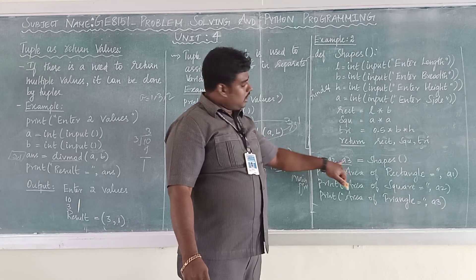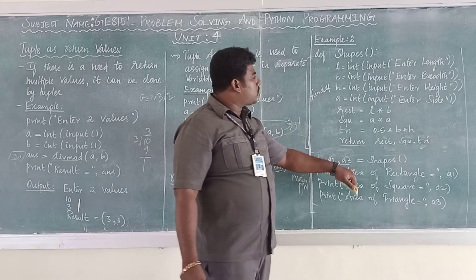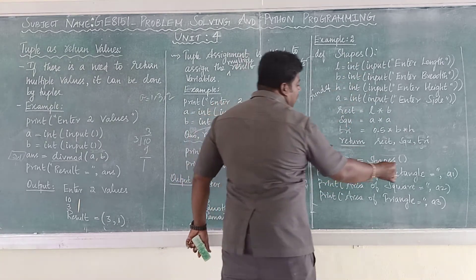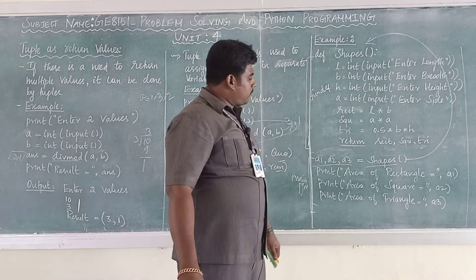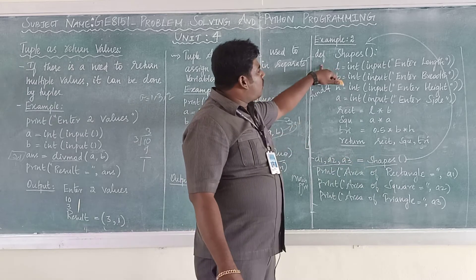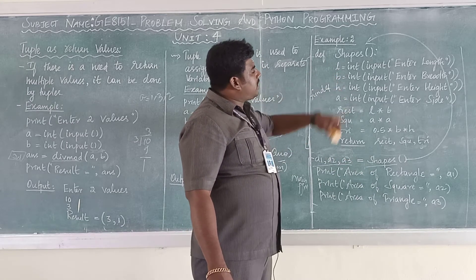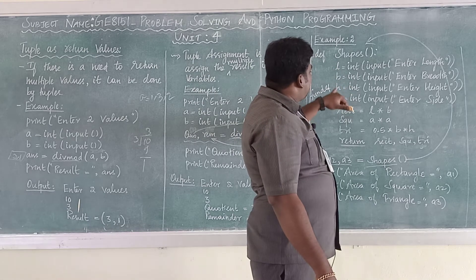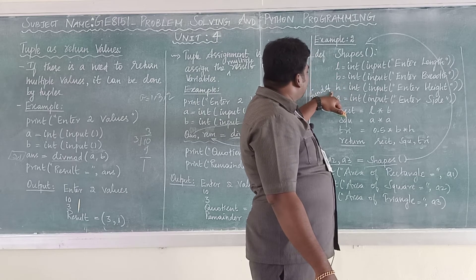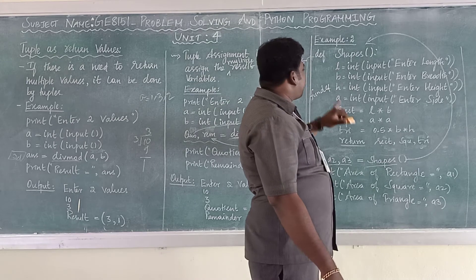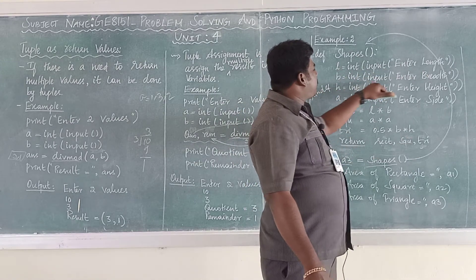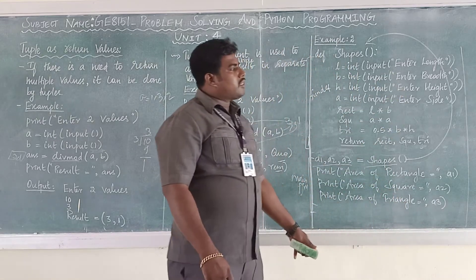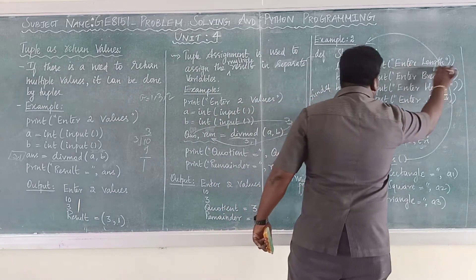A1, A2, A3 equal to shapes(). Shapes is a function call that calls the function definition. Inside the function, I am getting the inputs. For calculating the area of rectangle, I need length and breadth — two inputs. For calculating the triangle, we need breadth and height. For the square, we need the side. So: L equals integer input for length, B equals integer input for breadth, H equals integer input for height, S equals integer input for side.